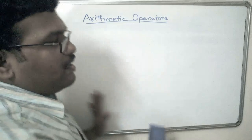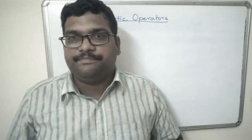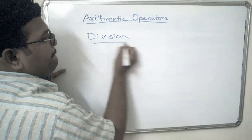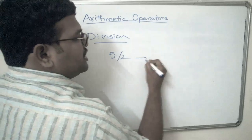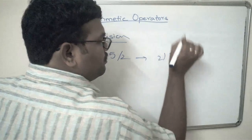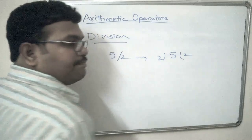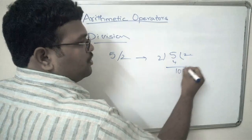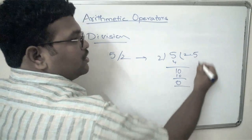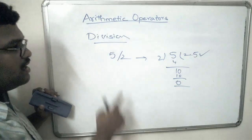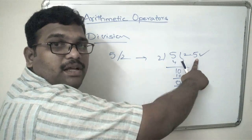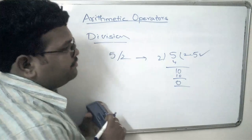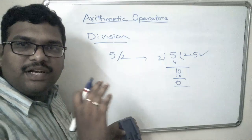Coming to the division operator, the quotient is the result. So if we consider 5 divided by 2, the same division is performed: two twos are four, giving a quotient of 2.5. The quotient is the result for the division operator, while the remainder is the result for the modulo operator. There is a little difference between division and modulo.